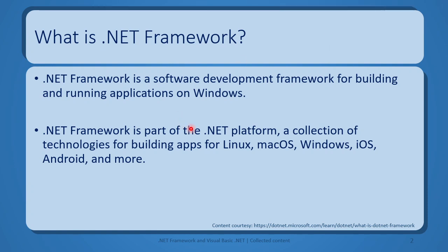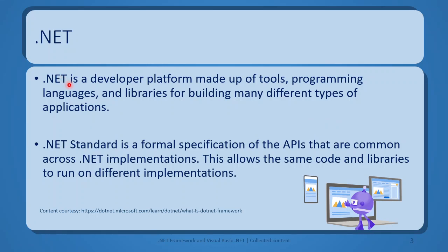What is this .NET platform? .NET is a developer platform made up of tools, programming languages, and libraries for building many different types of applications. There are different types of applications we can build, and hence there should be something common. That something common is offered with .NET Standard, which is a formal specification of APIs that are common across .NET implementations. This allows the same code and libraries to run on different implementations.